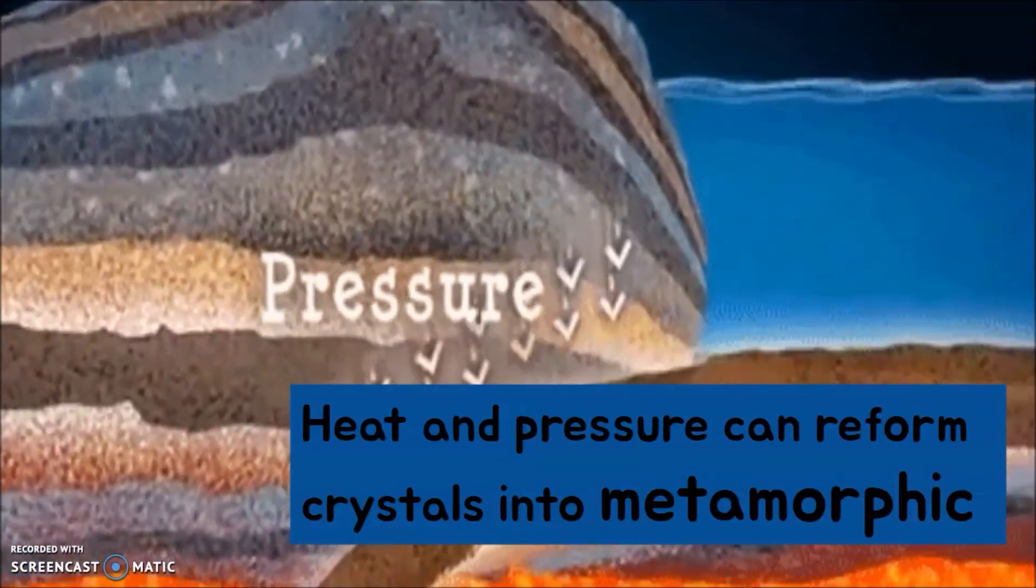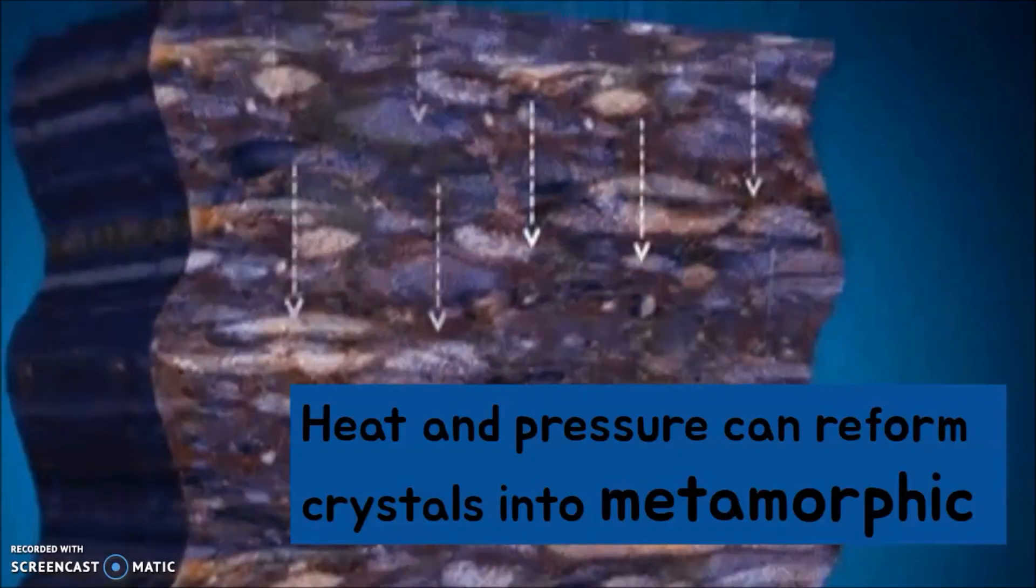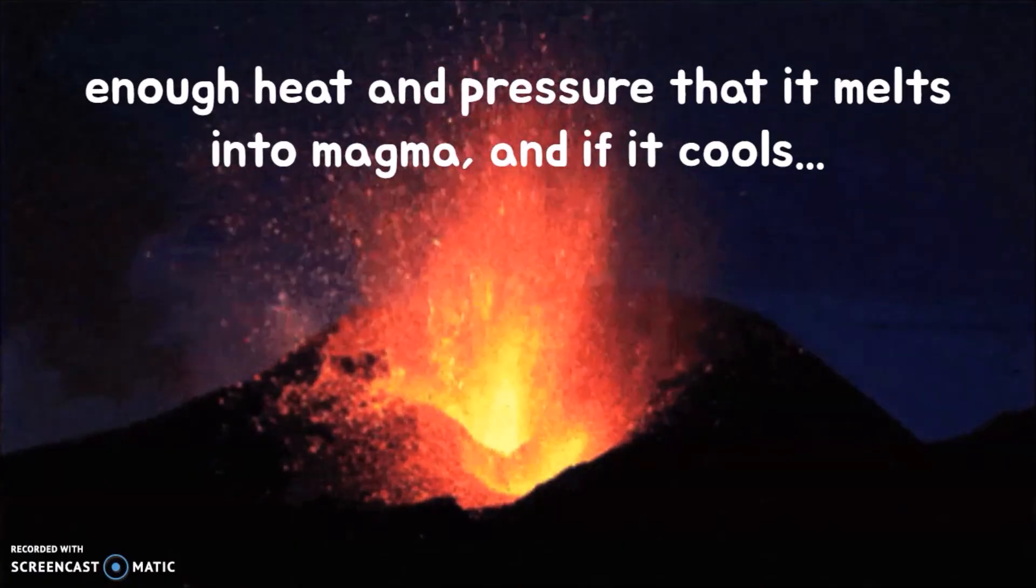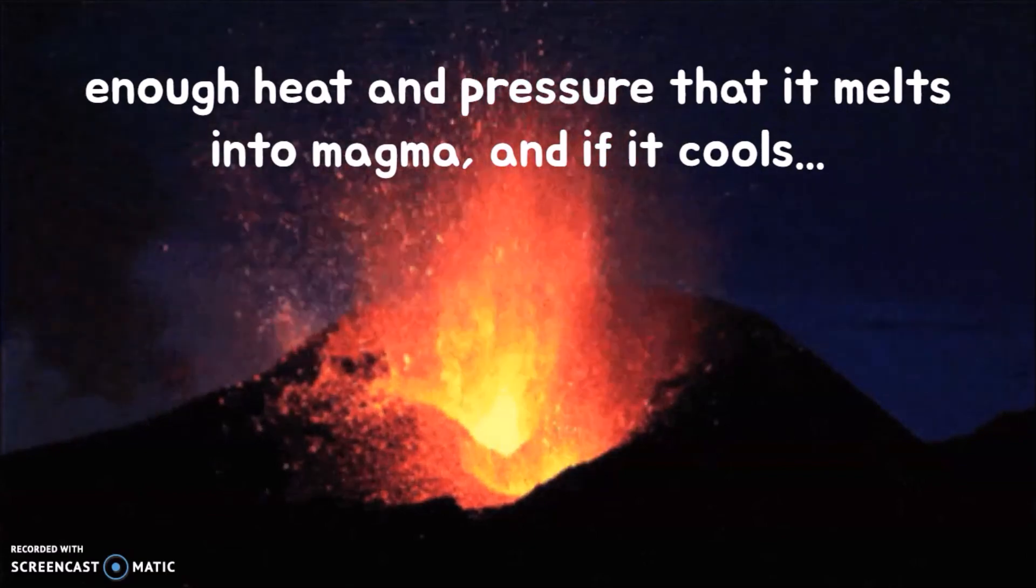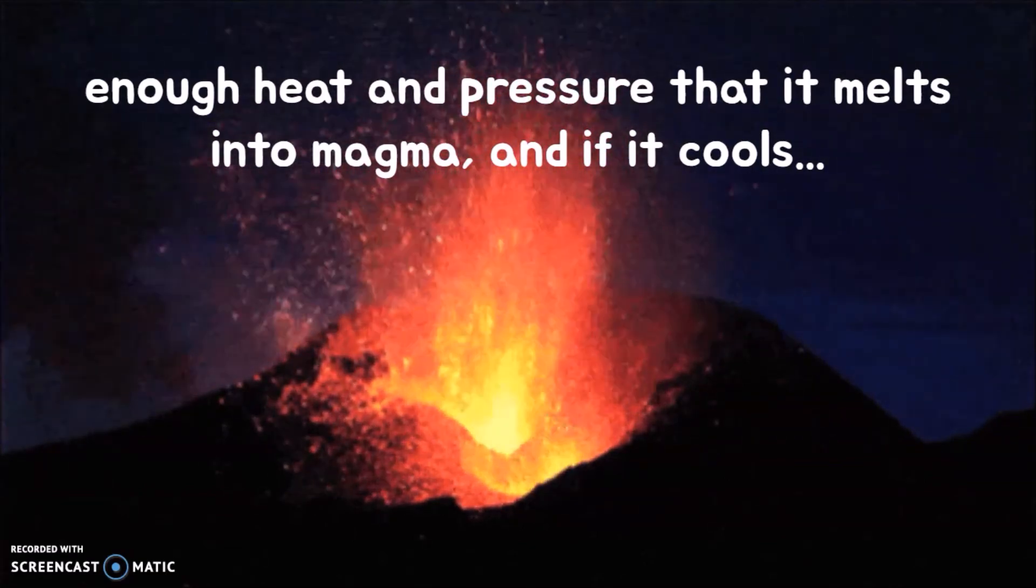Eventually, you have layers that build up, and through heat and pressure, the crystals reform into metamorphic rock. With enough heat and pressure on the metamorphic rock, it can then melt back into magma, and if it cools, then you start the process over again with igneous rock.